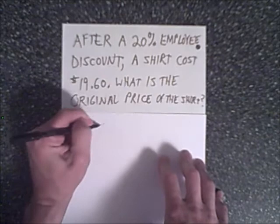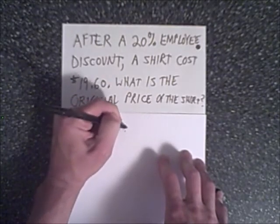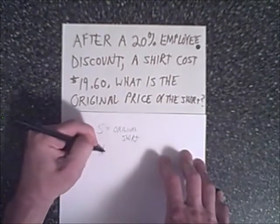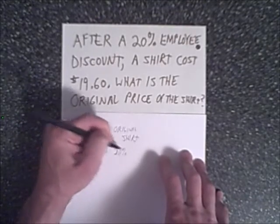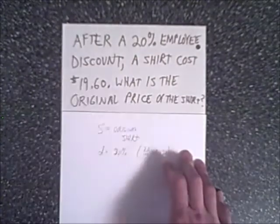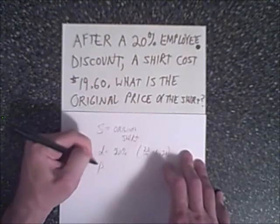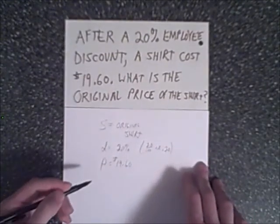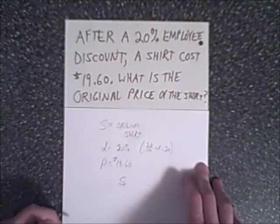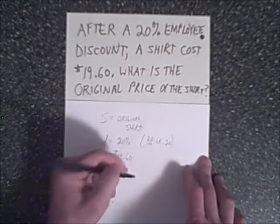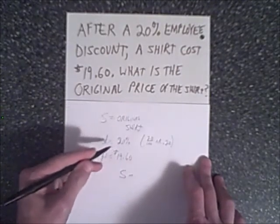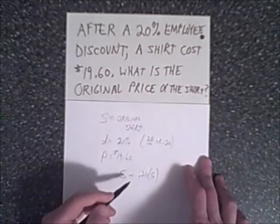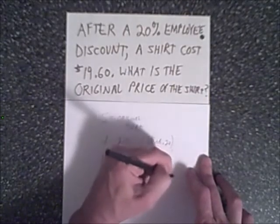Let's take S as the original price of the shirt. The discount D is 20%, which is 20 over 100 or 0.2. The final price P equals $19.60. Now let's put the formula together correctly. We have the shirt S, the original price we're looking for, and we subtract the discount, which is 20% of the original shirt — so 0.2 times S. That equals our final price of $19.60. We're visualizing: take the original price, subtract 20% off the original price, and we end up with $19.60.